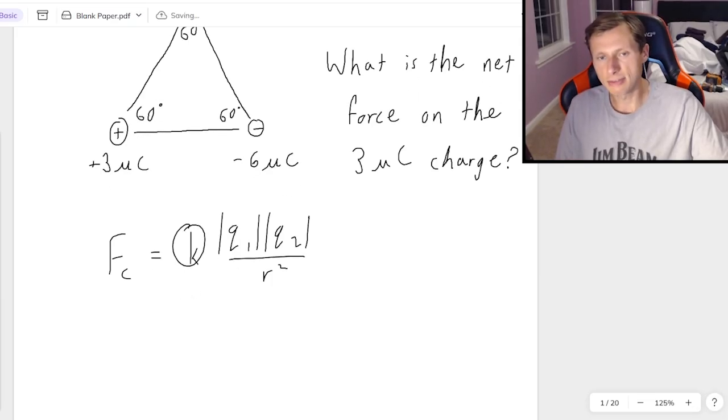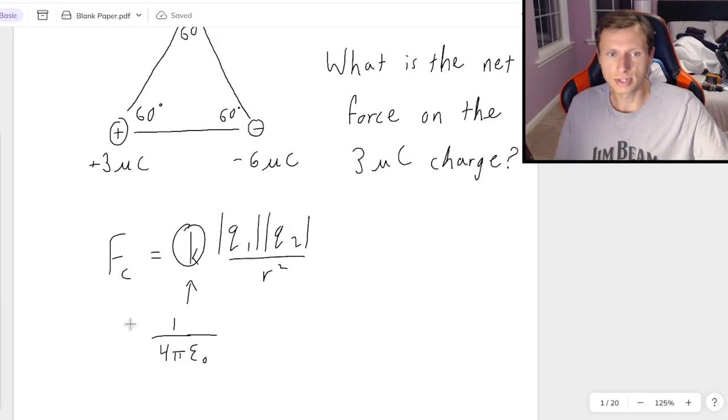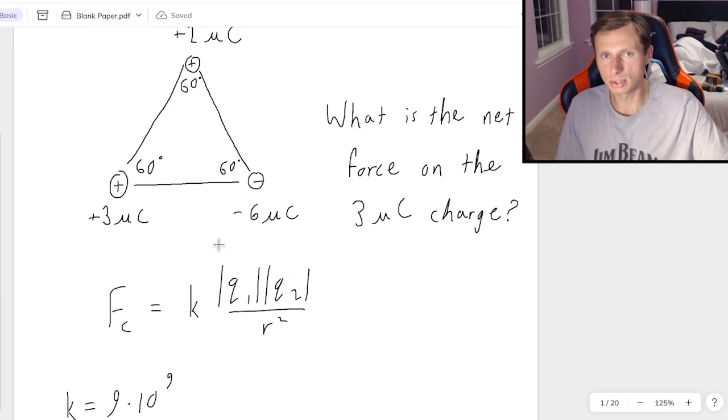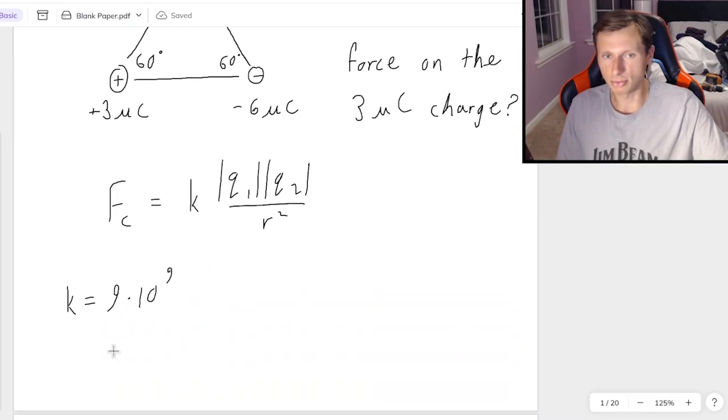You might also see this k differently. For instance, I've seen professors call this 1 over 4 pi epsilon naught, where epsilon naught is another constant. This is true too, but in this video I'm just going to use k. If your professor wants you to use 1 over 4 pi epsilon naught, then just replace every k with that. It's going to be the same number at the end of the day, because both constants equal 9 times 10 to the 9th.